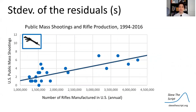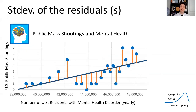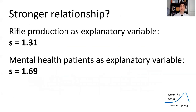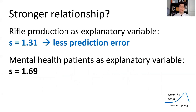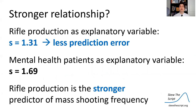If we use rifle production as the explanatory variable and calculate the standard deviation of residuals, it comes out to 1.31. For mental health as an explanatory variable, the standard deviation of residuals is 1.69. So we have a quantitative measurement of difference in strength. We're making less error typically with rifle production as the explanatory variable — there's less prediction error, so rifle production is a stronger and more accurate predictor of mass shooting frequency annually.